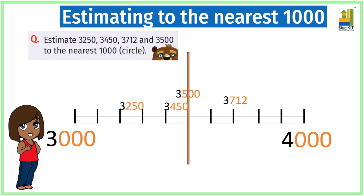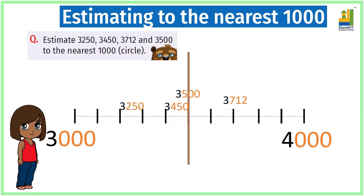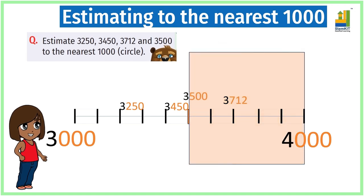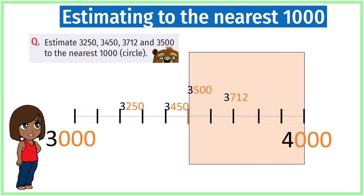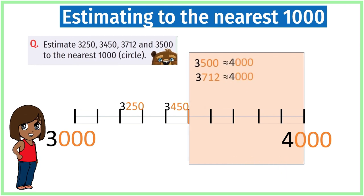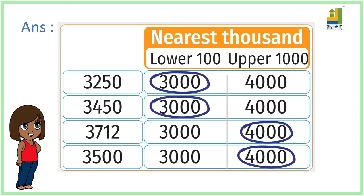On the other hand, 3500 and 3712, estimated to the nearest thousand, are each estimated to 4000. The answer table will look something like this. That completes our lesson on estimations. Thank you.